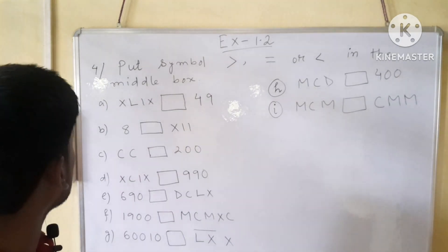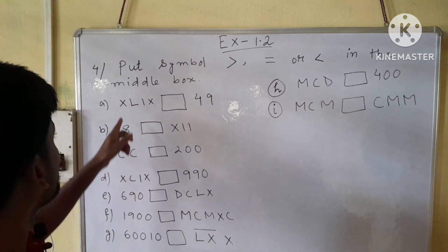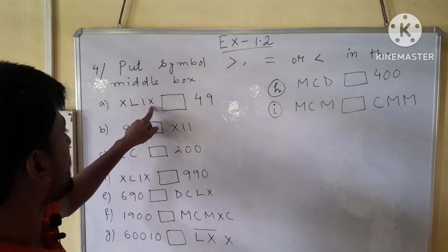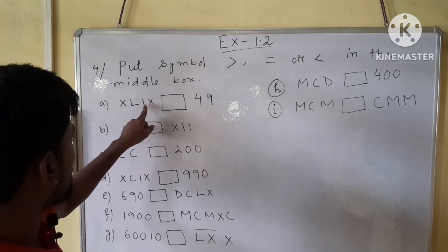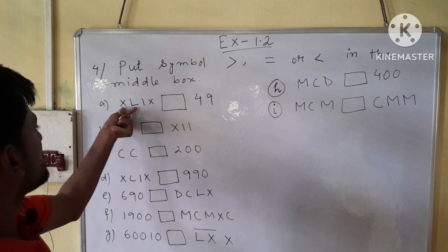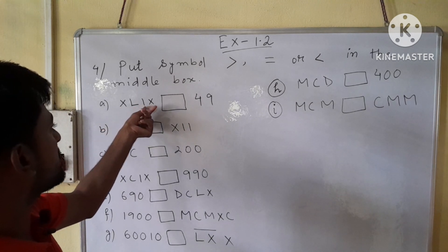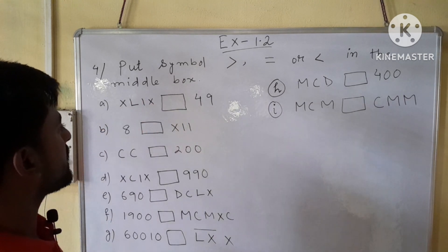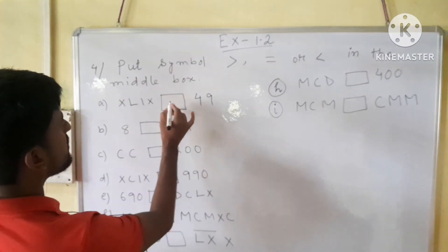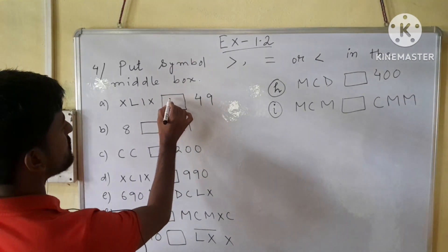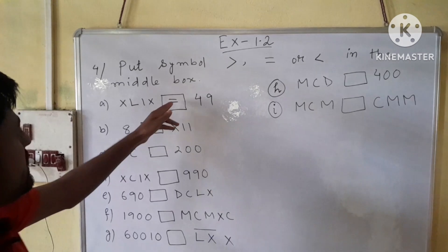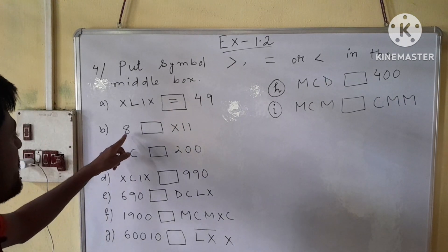Let us see question number A. Here, XLIX makes 40 and 9, so it will be 49. And on the right side we also have 49 given. So it will be equal — in the middle box we have to write the equal sign.